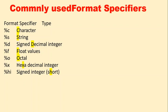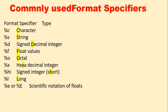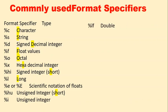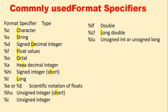%h stands for short integer, and %l stands for long integer. %e (lowercase or uppercase E) is used for scientific notation or exponent format — for example, when a calculator displays a large result like 3.3E+3. %hu means short unsigned integer, %u means unsigned integer, %lf stands for double (double precision), and %lu means unsigned long integer.